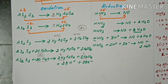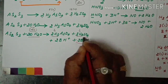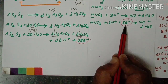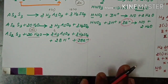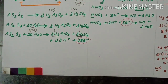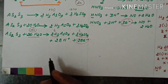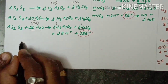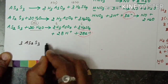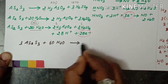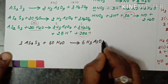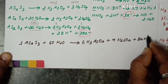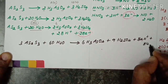Now we balance the electrons. The oxidation half has 28 electrons and the reduction half has 3 electrons. To balance, multiply the oxidation half by 3 and the reduction half by 28. So: 3AS2S3 plus 60H2O gives 6H3AsO4 plus 9H2SO4 plus 84H+ plus 84 electrons.